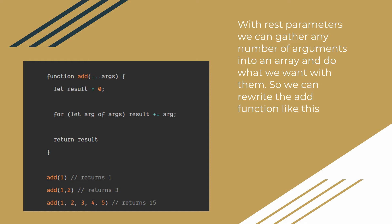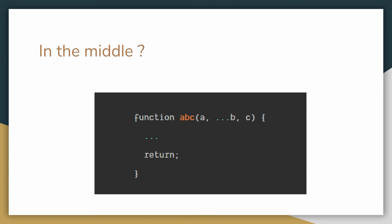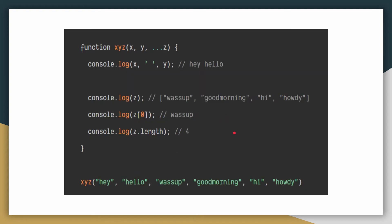There are a few pitfalls with the rest parameter you should always keep in mind. The rest parameter has to be the last argument, because all the remaining elements are stored in an array. Having a function definition where the rest parameter is in the middle does not make sense and it gives errors. For example, if we used the rest parameter as the second argument, when we pass the first argument it gets stored in a, all other elements go into p, and nothing will ever be stored in c. What you should do instead is use a function like xyz with three arguments where the rest parameter is used only with the last argument z.